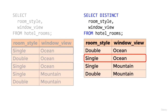In summary, we get a unique combination of values for both room_style and window_view as we specified both columns in SELECT DISTINCT. Understanding this concept of uniqueness across combinations of values is really important when it comes to writing accurate SQL, and we'll be revisiting this in later lectures when it comes to grouping data.